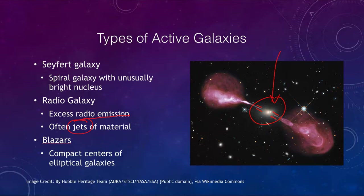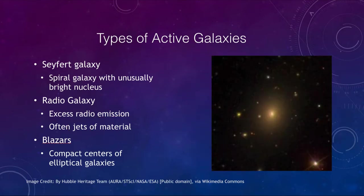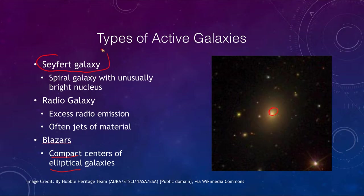Another thing we see at the centers of these is what we call a blazar. A blazar is the compact center of the galaxy — the very compact material at the center of, in this case, an elliptical galaxy. So what we're beginning to see is that certain types of active galaxies are associated with certain types of normal galaxies: Seyfert galaxies are an example associated with spiral galaxies, whereas blazars are related to elliptical galaxies.